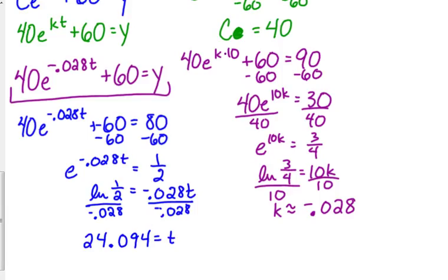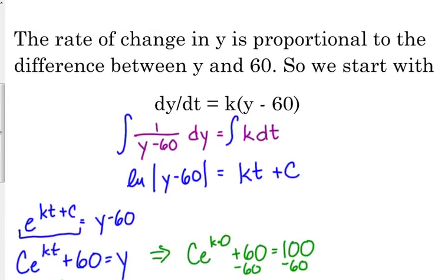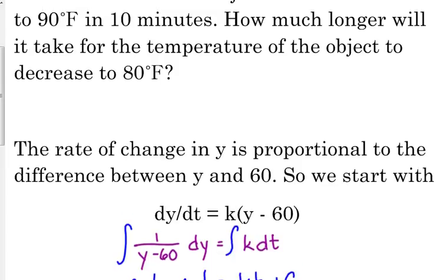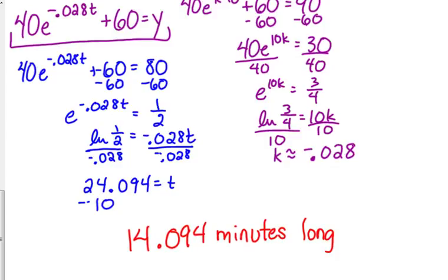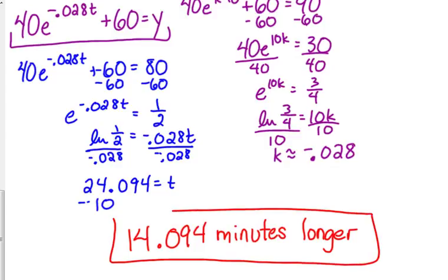Be careful with the phrasing of the question. The question said, how much longer will it take for the temperature to decrease? So that's the time that it happens. Ten minutes have already passed. So the actual answer is 14.094 minutes longer. Every once in a while they'll throw those. And I can guarantee if this is a multiple choice question, 24.094 would be one of the answer choices.